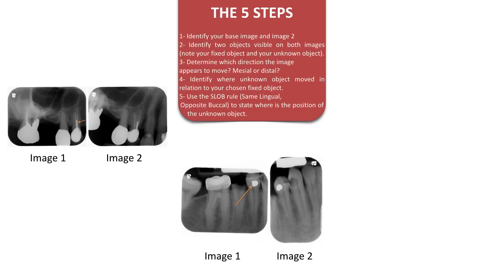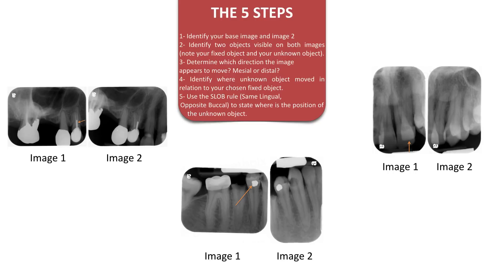In example two, we are trying to find where the amalgam filling is placed on the lower right four — is it on the buccal or the lingual surface? Image one is our base image, the fixed object is the lower right four, and the unknown is the amalgam filling. Image two appears to be moving mesially, and the amalgam filling is moving away, or opposite to the horizontal shift. Therefore, using the SLOB rule, the amalgam filling is placed on the buccal surface of the lower right four.